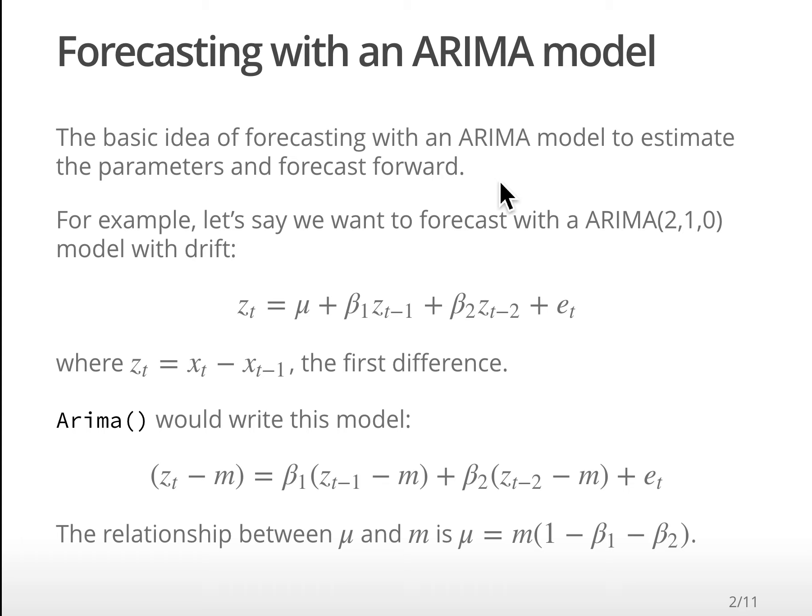The basic idea is we've got some ARIMA model, and now we have the parameters estimated and we're going to be forecasting forward. For example, let's say we want to forecast with an ARIMA(2,1,0) model with drift. So what is that model?